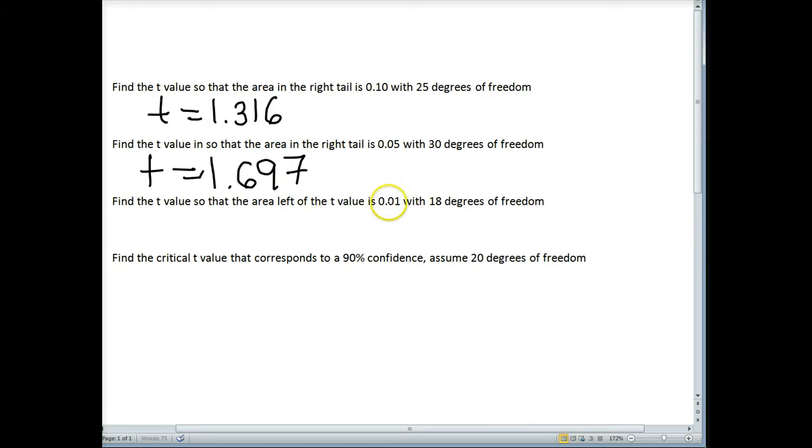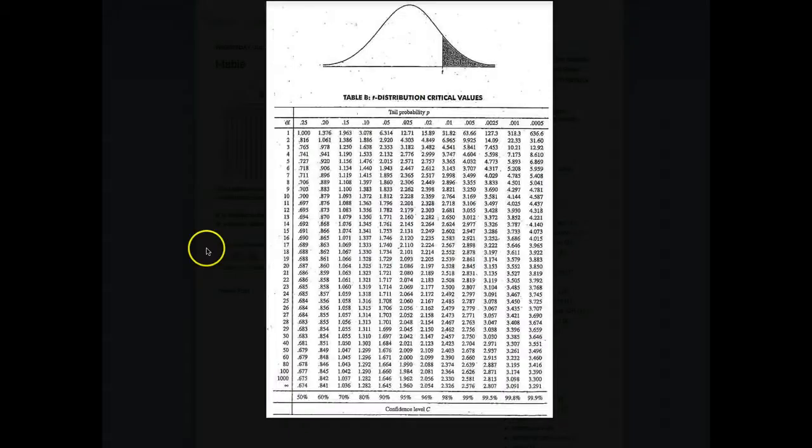Find the t-value so that the area to the left is 0.01. Now you remember this particular table gives the area to the right. So in order to find the area to the right, I need to take 1 minus the area to the left. And please be careful with your decimal points here. With 18 degrees of freedom.